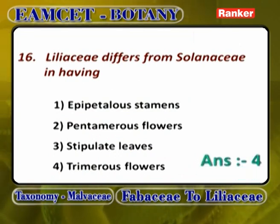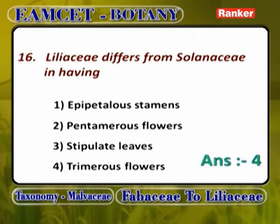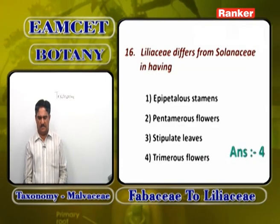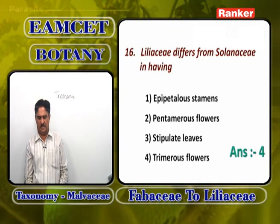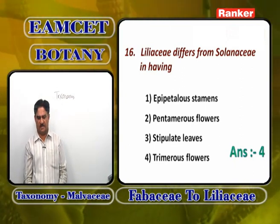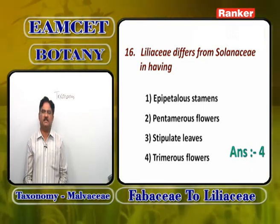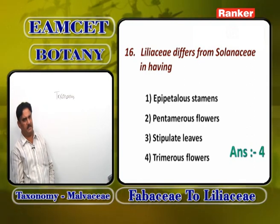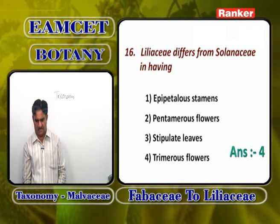Liliaceae differs from Solanaceae in having: epipetalous stamens (epiphyllous) — seen in some Liliaceae. Liliaceae does not show pentamerous flowers or stipulate leaves. The main difference is trimerous flowers — 3 petals, 3 sepals, or perianth lobes 6 arranged in 2 groups of 3 each. Answer is 4.